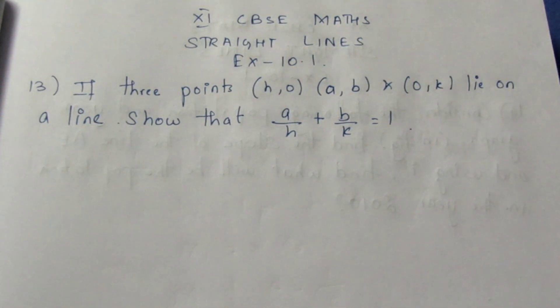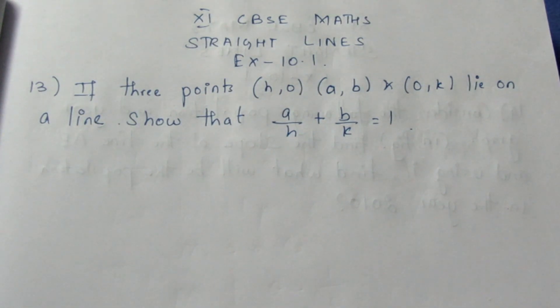Let's see the question. If three points (h,0), (a,b), and (0,k) lie on a line, show that a/h + b/k = 1.